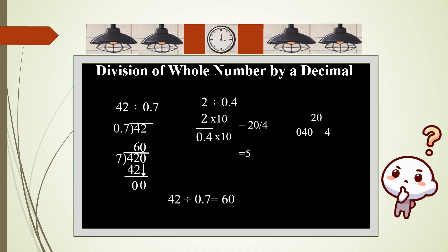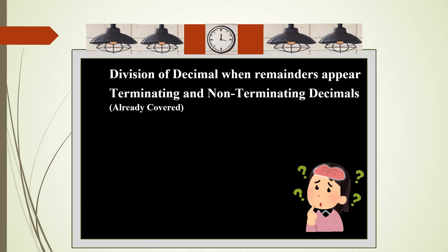Next is division of decimals when remainders appear. We have already covered terminating and non-terminating decimals. You can check out the link in the description. When we divide decimals, we do not show the remainders. We add extra zeros to complete the division. Writing an extra 0 in the dividend does not change the value of the dividend. For example, 7.5 divided by 2.